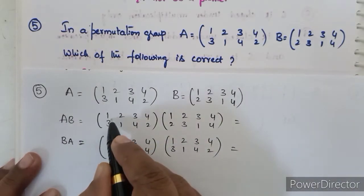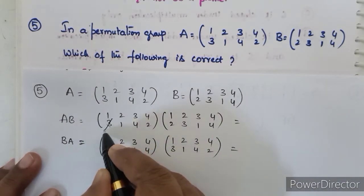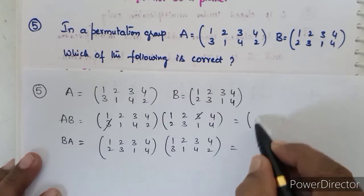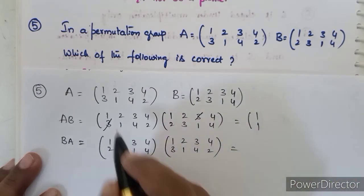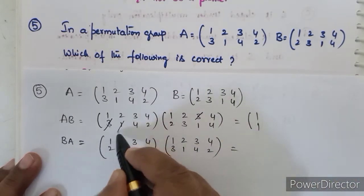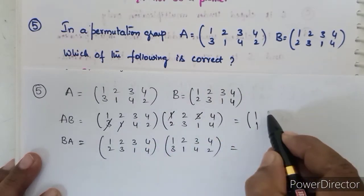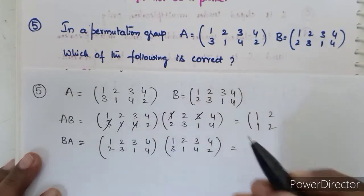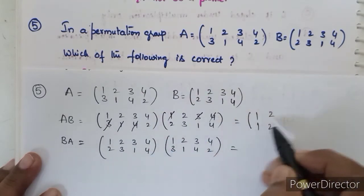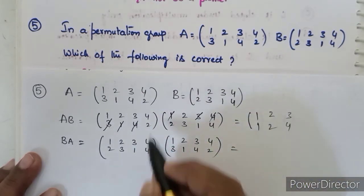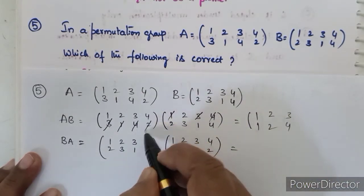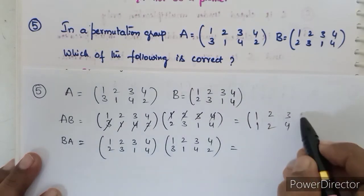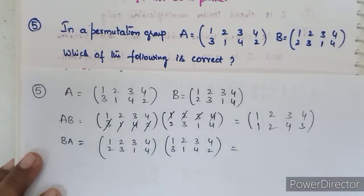Computing AB: 1→3, and 3→1, so 1→1. 2→1, 1→2, so 2→2. 3→4, 4→4, so 3→4. 4→2, 2→3, so 4→3. Therefore AB maps: 1→1, 2→2, 3→4, 4→3.